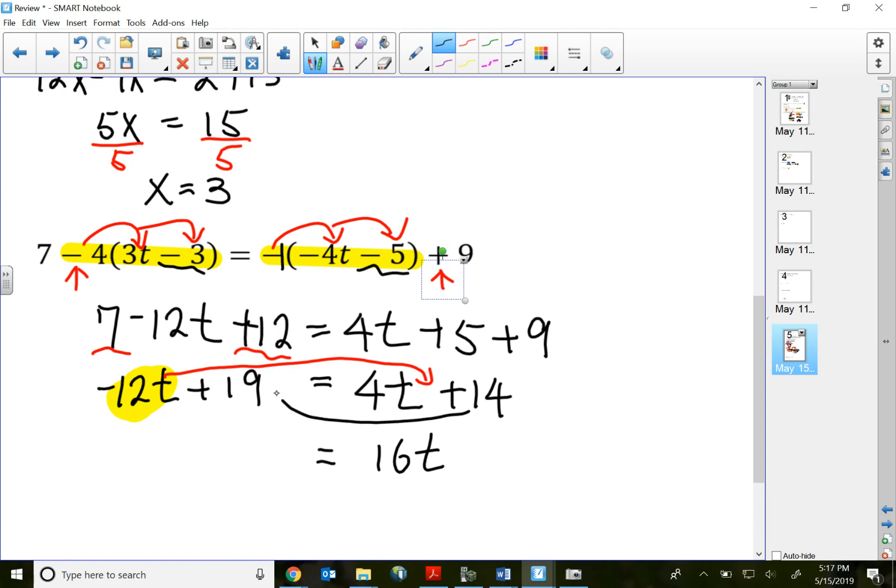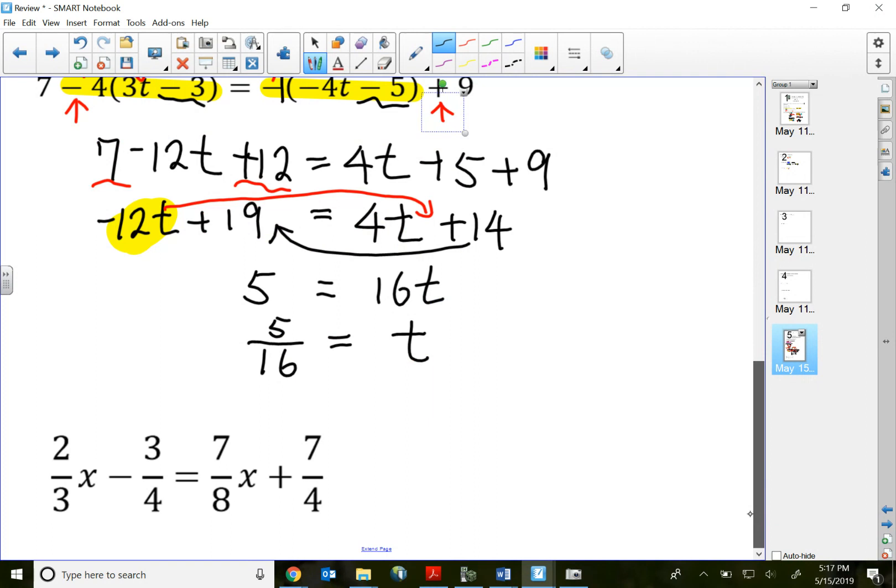Positive 14 goes over, becomes negative. So that will be 19 minus 14, which is 5. Divide both sides by coefficient 16. So my answer would just be 5 over 16.